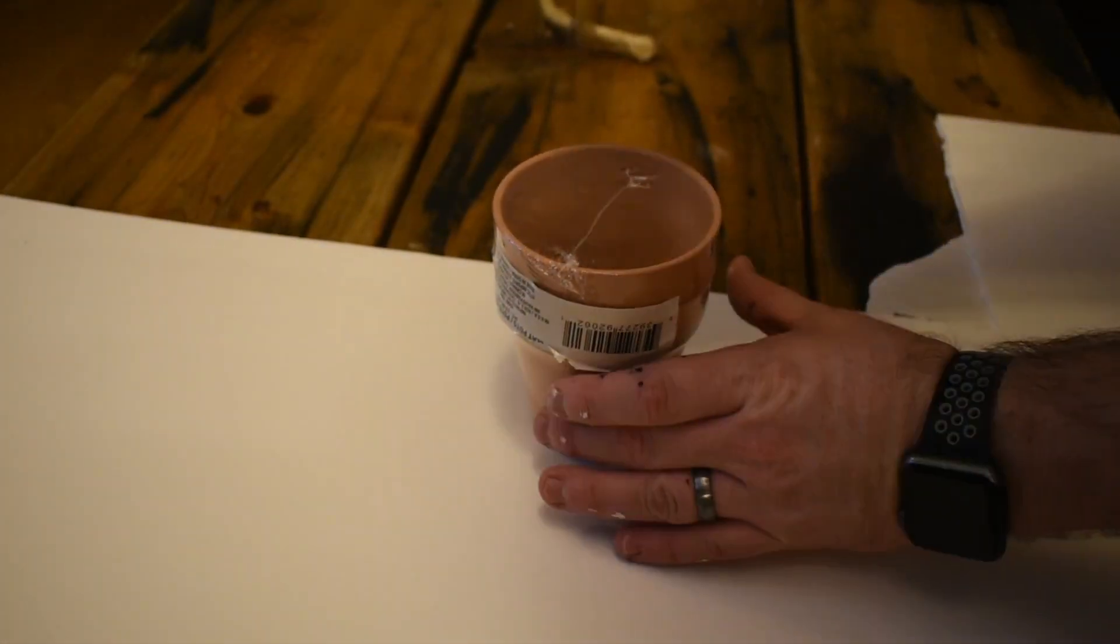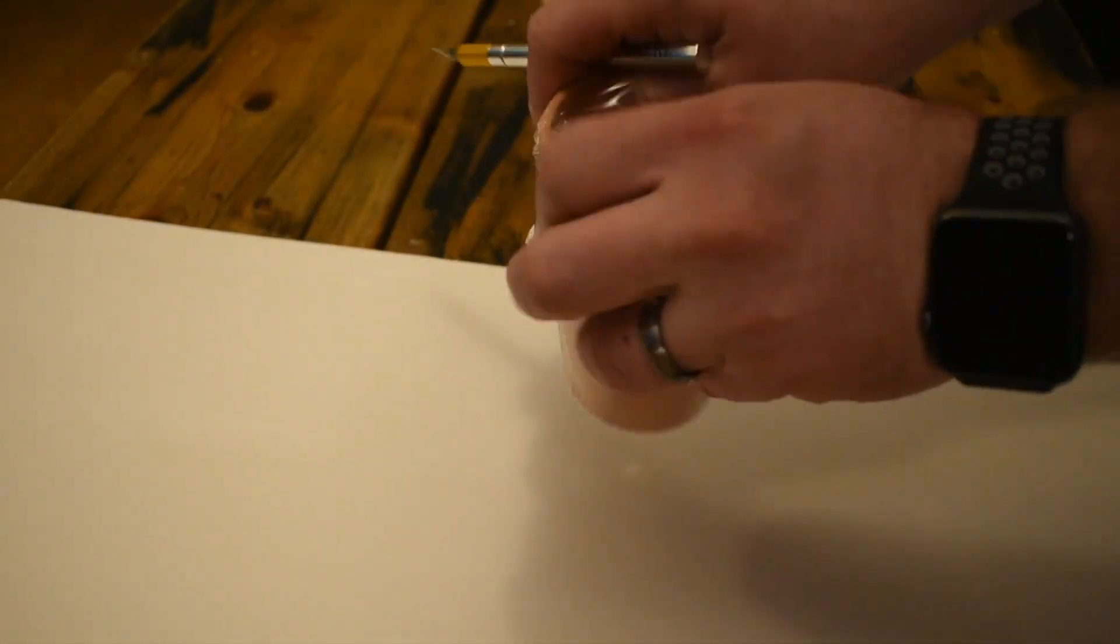First things first, you're going to open up those planters and you're just going to take them out and start painting them with the black paint.